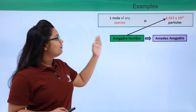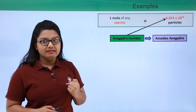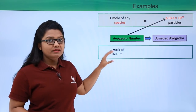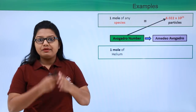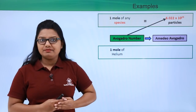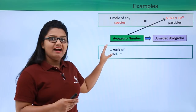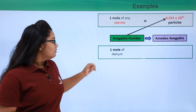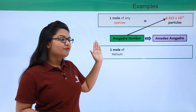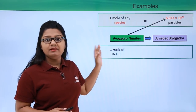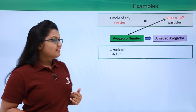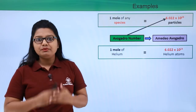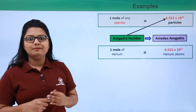Now let's look at some examples. Suppose we have one mole of helium. Helium is an element, so its particles are helium atoms. How many helium atoms does one mole of helium contain? It must have Avogadro's number of helium atoms — that is, 6.022 × 10²³ helium atoms.